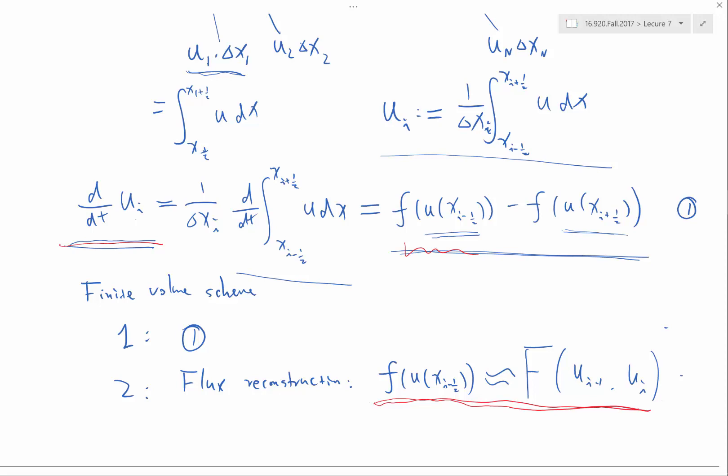But the overall integral is going to be exactly the same. So you would make no error in conservation. In other words, d/dt of the summation of u_i times Δx_i is going to be what?